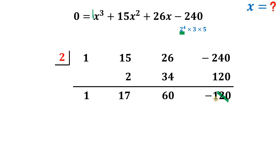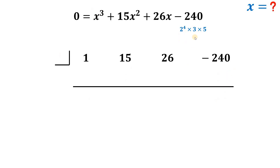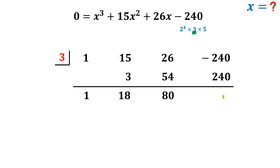Let's try x = 3: bring down 1; 1×3=3; 15+3=18; 18×3=54; 26+54=80; 80×3=240; −240+240=0. Therefore x = 3 is a solution to this cubic equation. Continuing with synthetic division using the remaining coefficients 1, 18, 80.